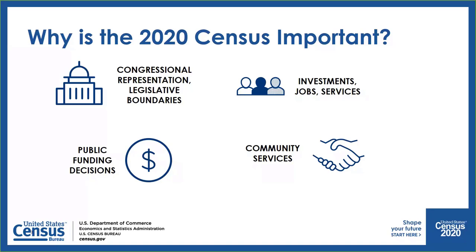Now let's talk about power. Every 10 years, the results of the Census are used to reapportion the House of Representatives, determining how many seats each state gets. The data is used by state officials to redraw the boundaries of the congressional and state legislative districts in their states to account for population shifts.